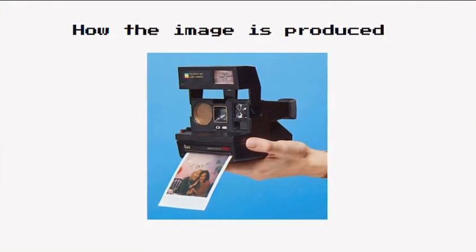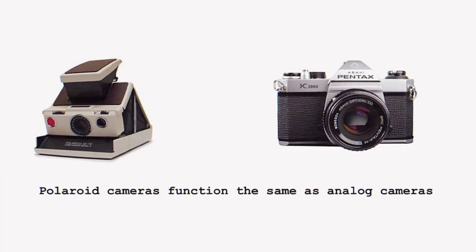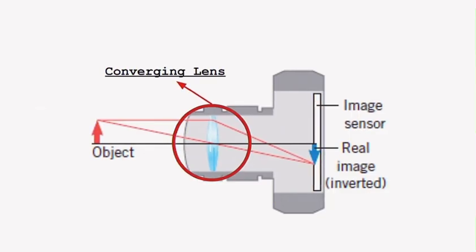How the image is produced. Most Polaroid cameras function the same as analog cameras, using a converging lens to capture an image.